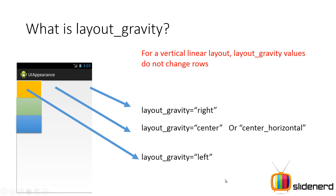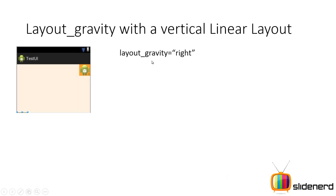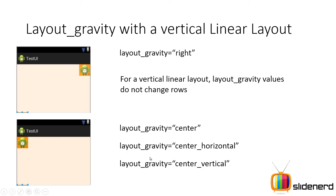Let me show you real examples of how this looks on screen. In the vertical linear layout, when I say layout gravity is right, you can see the image view is on the right side. When I say layout gravity is center or center horizontal, it sticks in that same place. But if you put a value like center vertical, it goes back to the default location because center vertical is not supported by a vertical linear layout — you're trying to change rows. Layout gravity values do not alter columns in a horizontal linear layout and do not alter rows in a vertical linear layout.